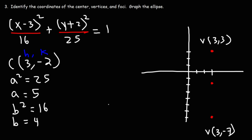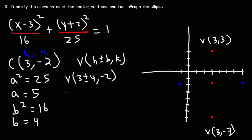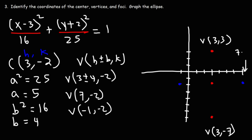Now for b: b equals 4 and is associated with x, so we go 4 units right and 4 units left from the center. The coordinates of the minor vertices are h plus or minus b comma k. h is 3, b is 4, k is negative 2: 3 plus 4 equals 7 and 3 minus 4 equals negative 1. So the minor vertices are at 7 comma negative 2 and negative 1 comma negative 2. Then we connect the four vertices to graph the ellipse.